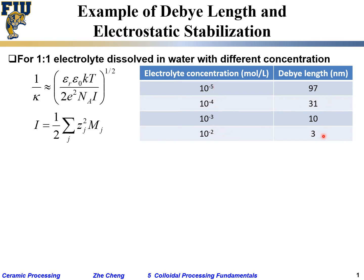The higher the concentration, the lower the Debye length, which means the double layer got squeezed.